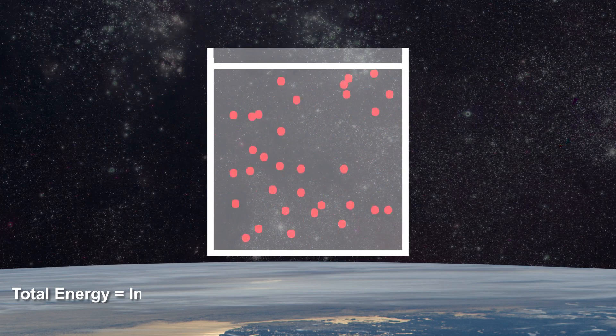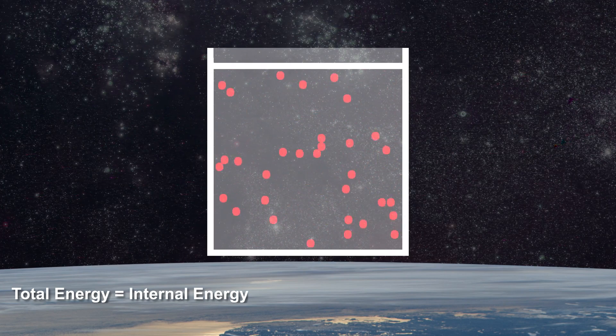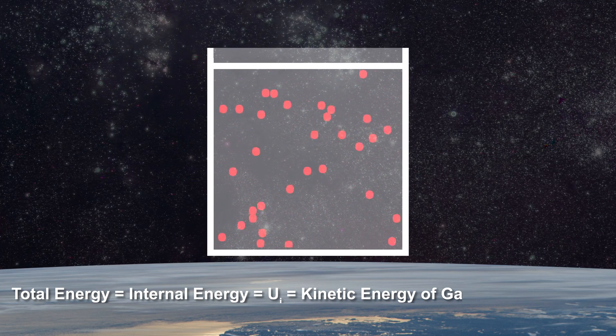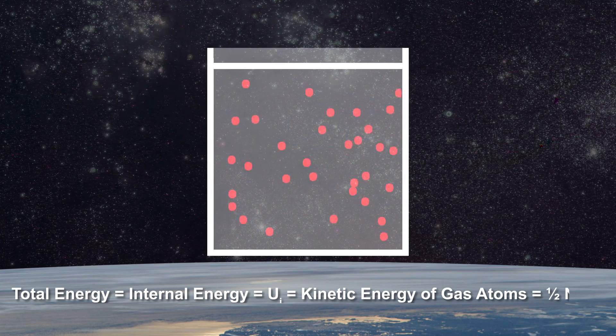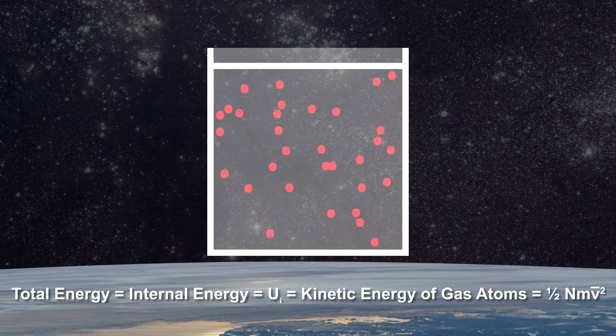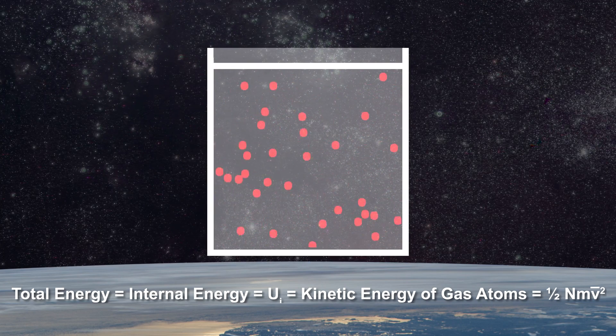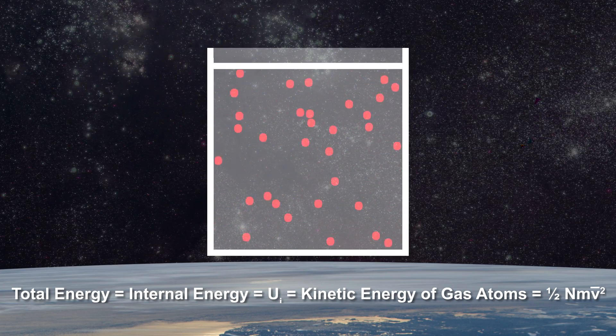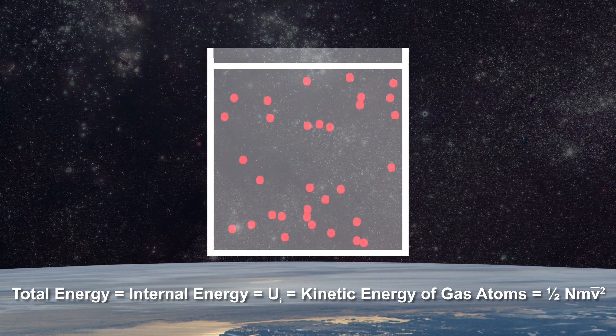The total energy of this system is equal to its total internal energy U which in turn is equal to the total kinetic energy of motion of the gas atoms given by one half nm v bar squared. In this equation n represents the number of particles, m the mass of an individual atom or molecule and v bar the average velocity.